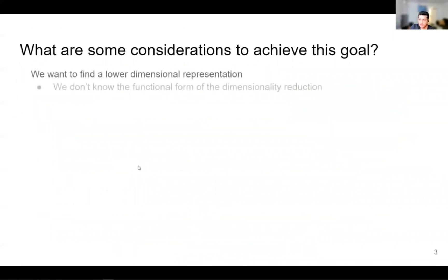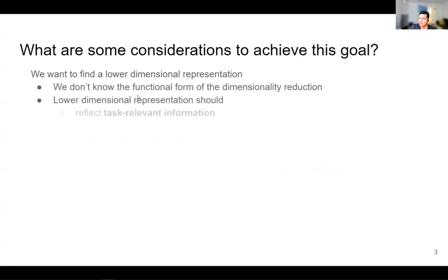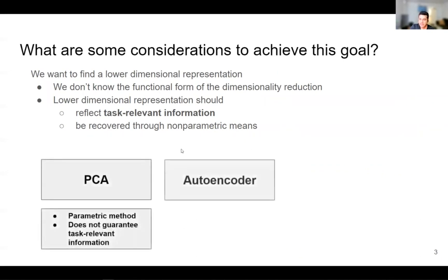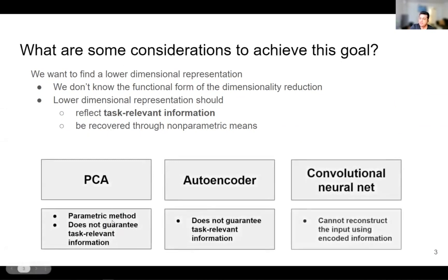There are some things to take into consideration for that. One is that we do not know the functional form of dimensionality reduction in these brain regions, so we are interested in developing assumption-free models. Another thing is that the lower-dimensional representation should reflect task-relevant information, and we need to be able to recover the original input using a non-parametric method. PCA is a dimensionality reduction technique, but it is a parametric method and does not guarantee task-relevant information.